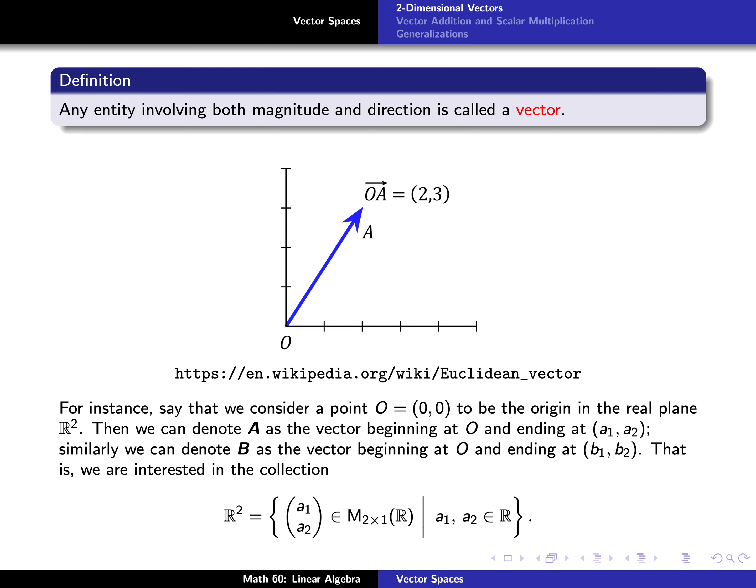We'll usually denote this by a bold letter — in this case, bold capital A. The collection of all such vectors we'll denote as R superscript 2. That is, we really want pairs of real numbers, namely A1 and A2.